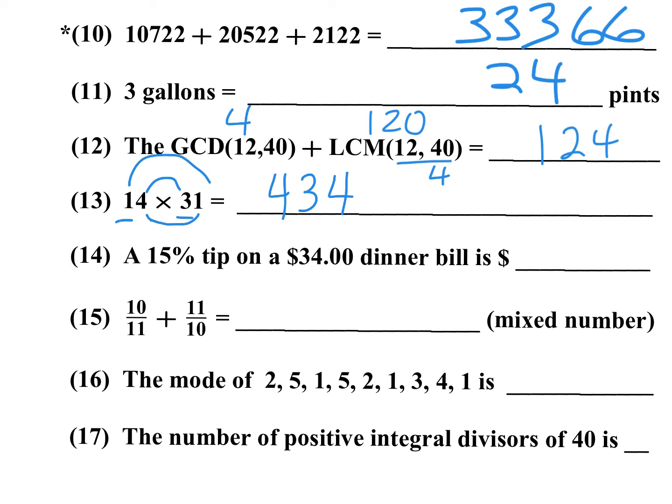Number 14: A 15% tip on a $34 dinner. At 10% that's $3.40, at 20% that's $6.80, so it's in between. Use the double-and-half method: double 15 to get 30, halve 34 to get 17. So 0.30 times 17 is $5.10.